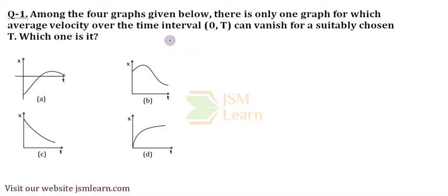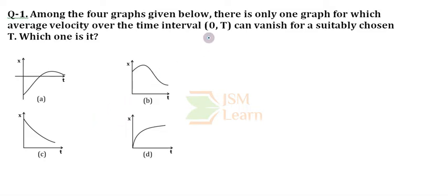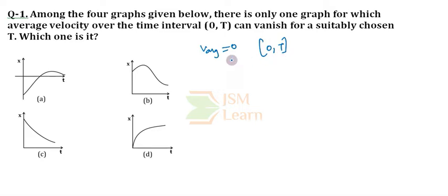In the question, they have given 4 graphs and they are asking us to identify the one graph whose average velocity is becoming 0 in the 0 to t time interval. They have particularly mentioned the 0 to t time interval — the average velocity should become 0.